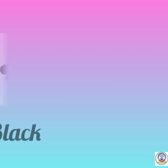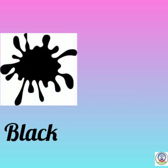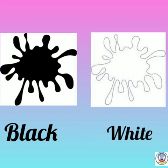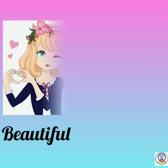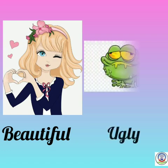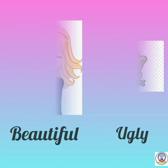जैसे मैं आपको और समझाना चाहूंगी — काला यानी black. Black का opposite क्या होता है? White यानी सफेद. खूबसूरत means beautiful. अब इसका opposite word क्या होगा? विरोधी शब्द हम क्या लिखेंगे? Ugly — means बदसूरत.